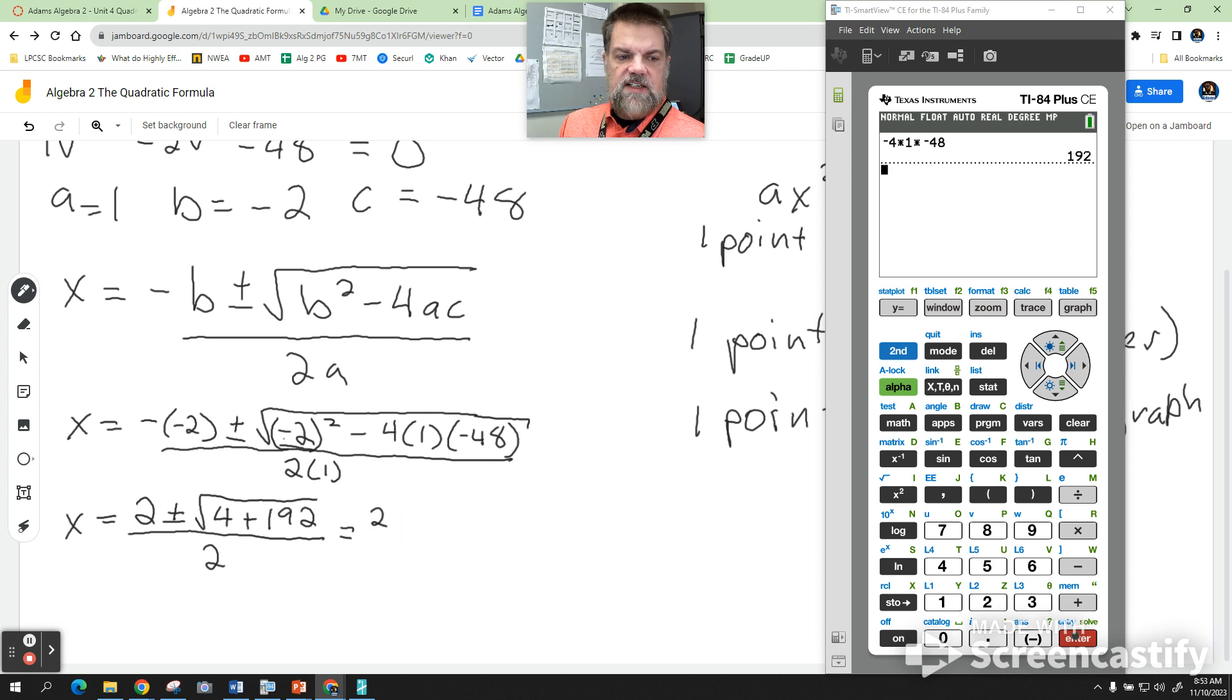I'm going to say 2 plus or minus the square root of 196, all over 2. And then I'm just going to see if I could take the square root of 196. Sometimes you can, sometimes you can't. 196 - yeah, it's 14. So I actually end up with 2 plus or minus 14, all over 2.